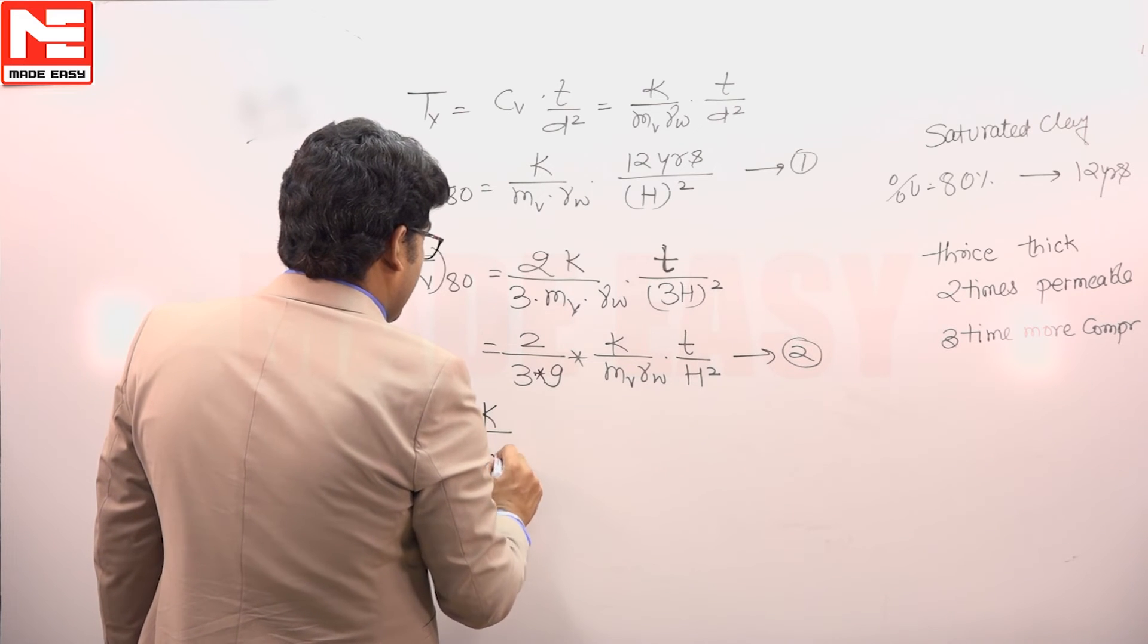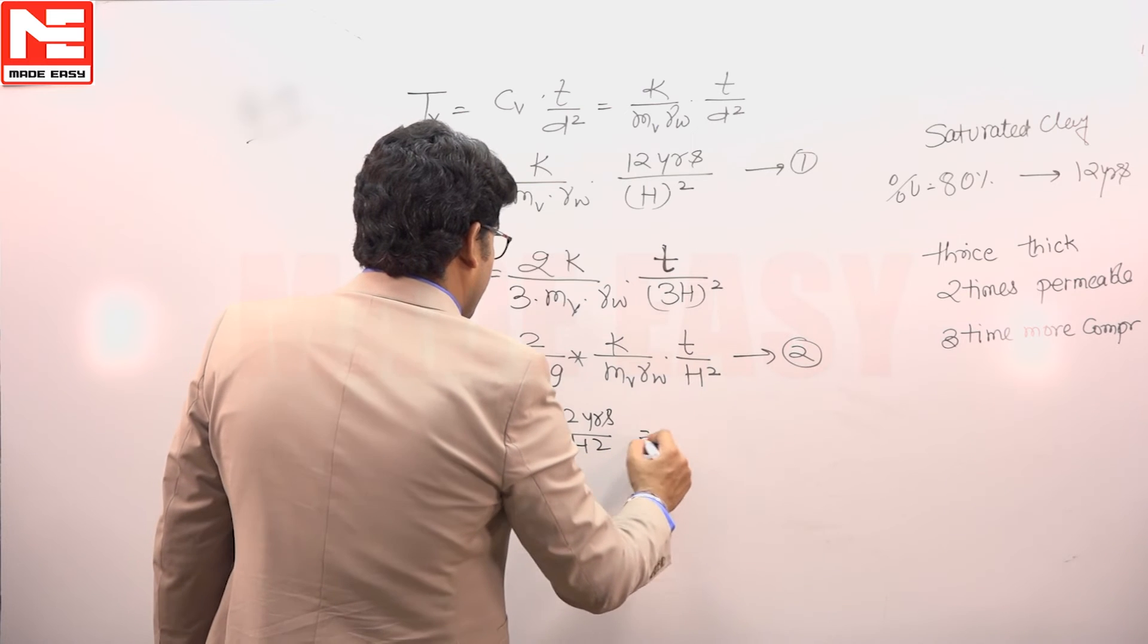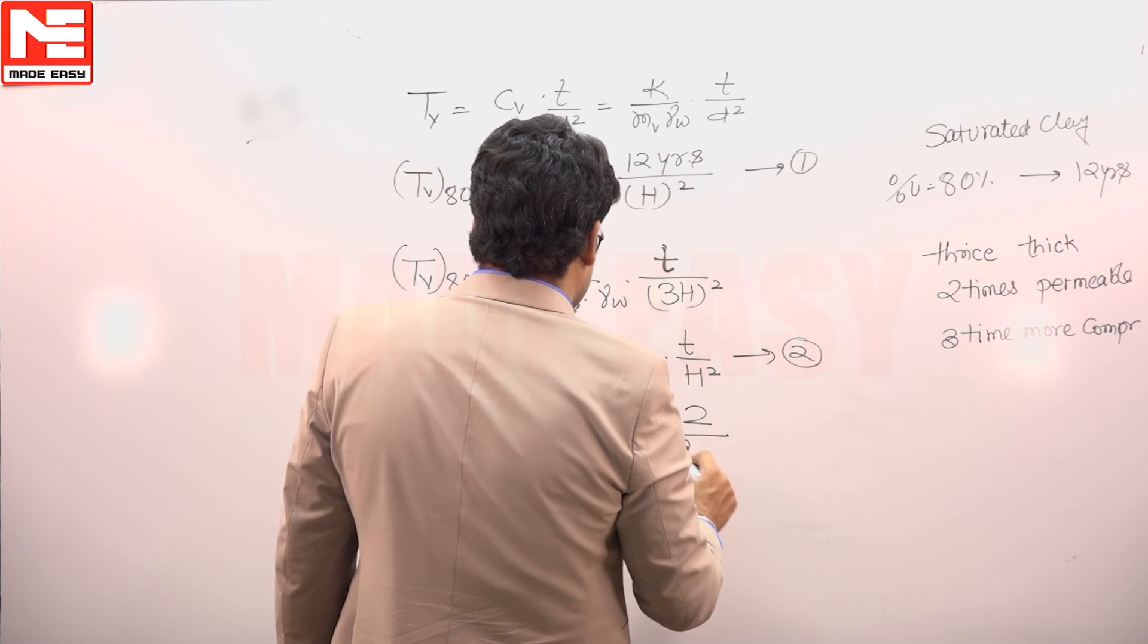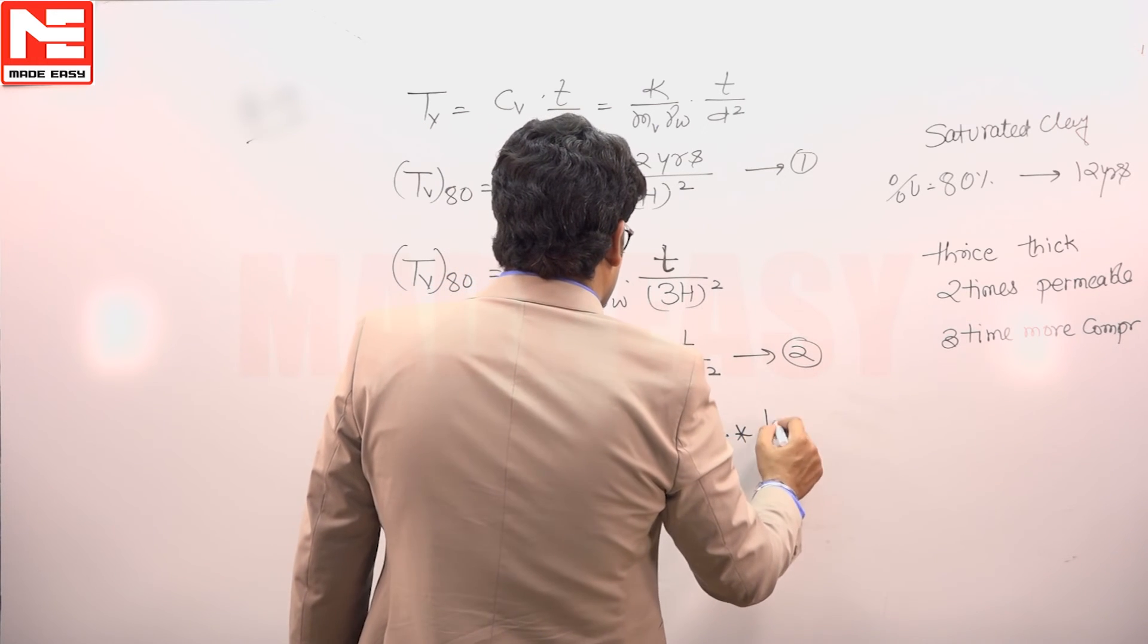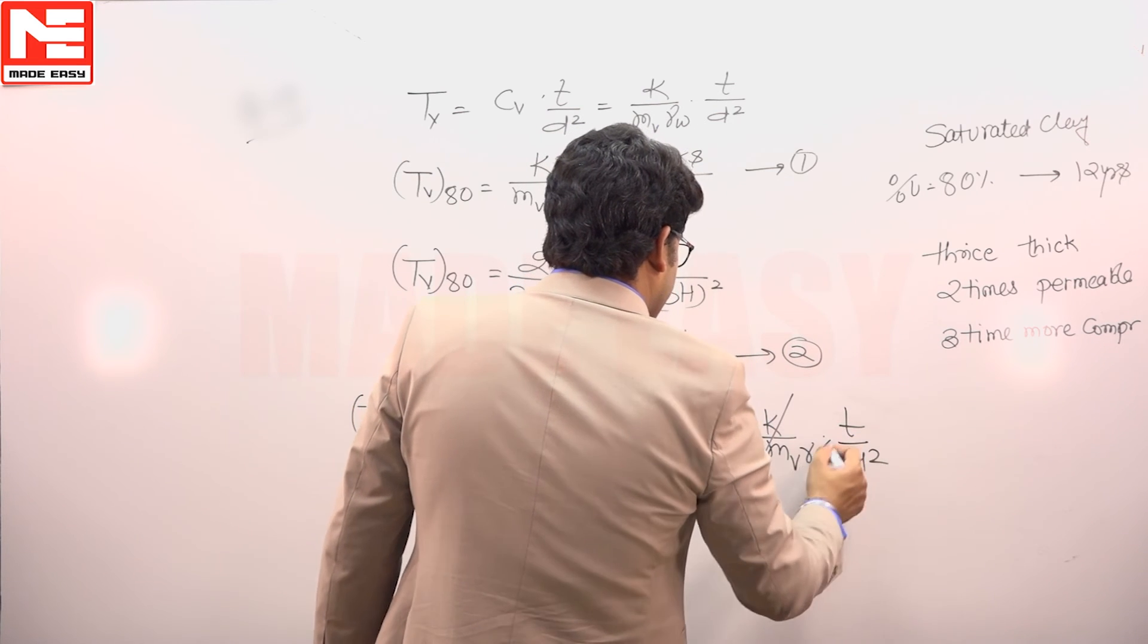So we can say K upon MV gamma W into 12 years divided by H squared will be equivalent to 2 into 27, 2 divided by 27, K upon MV gamma W into T upon H squared.